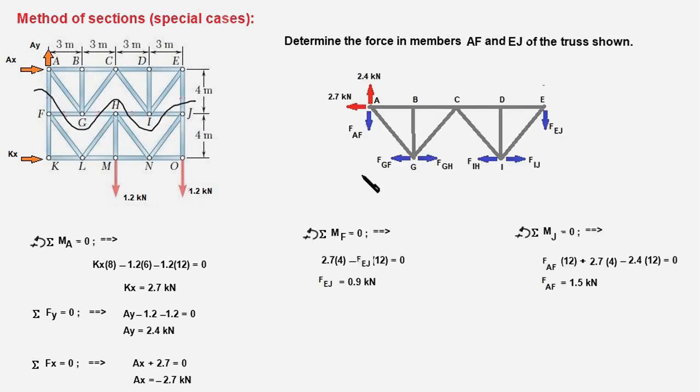This is the FBD of the top part of the truss and as you can notice this section intersects AF and therefore we will be exposing the force FAF acting at point A. We will be exposing the forces acting at point G, the internal forces in members GF and GH which are here, and similarly the forces in members HI and IJ acting at point I are shown here.